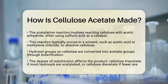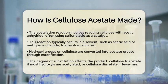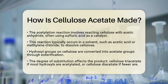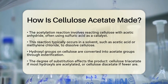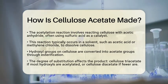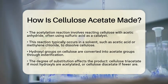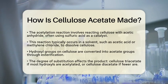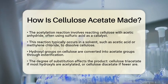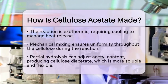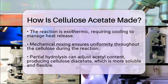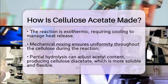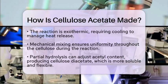After acetylation, we may want to adjust the acetyl content. This is done through partial hydrolysis, which reduces the acetyl content and produces cellulose diacetate. This step is crucial because cellulose diacetate is more soluble and flexible, making it suitable for different applications.